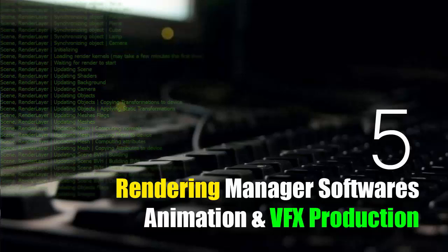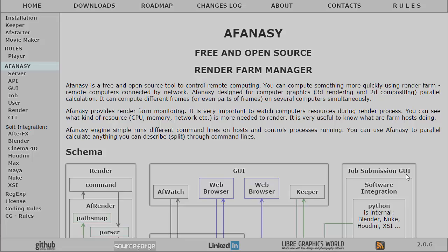These softwares are really very helpful in visual effects production. We'll see five softwares you can use in your production. Starting with free and open source options — number one is Afanasy from CGRU. You can download this application from cgru.info and find the link in the description. It's free and open source and you can use it for remote computing, distributing tasks across multiple machines.